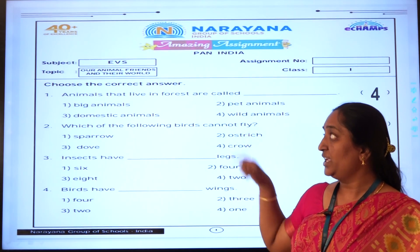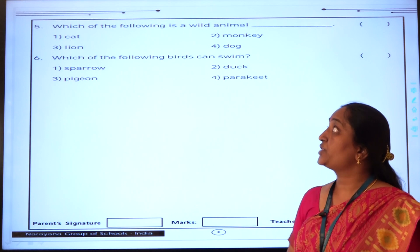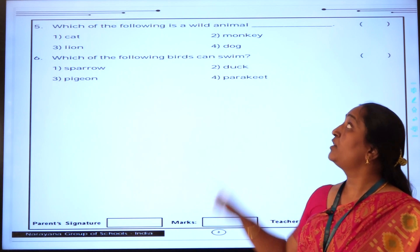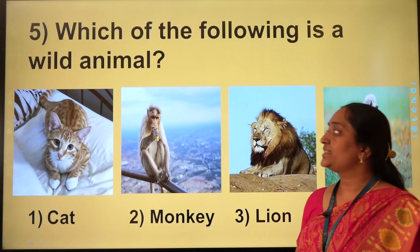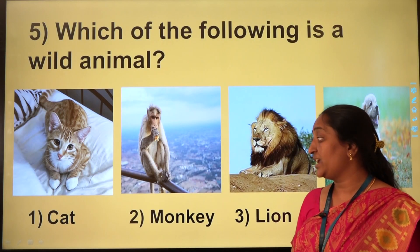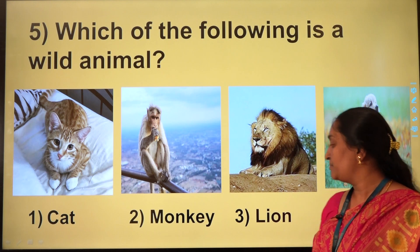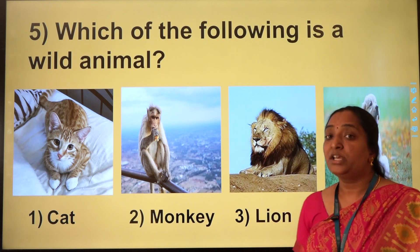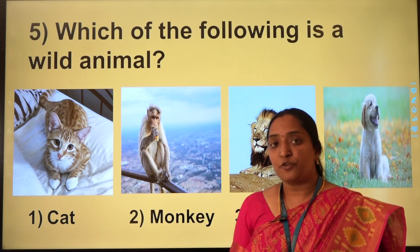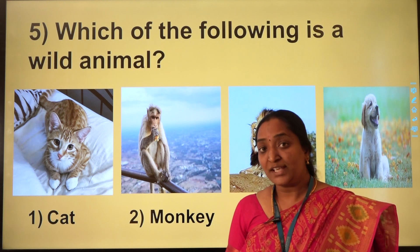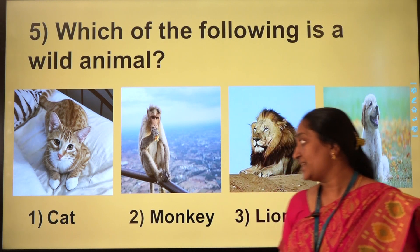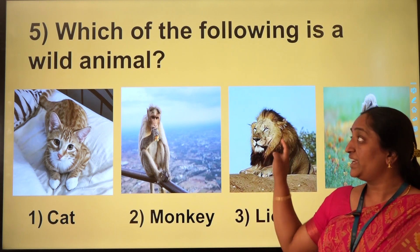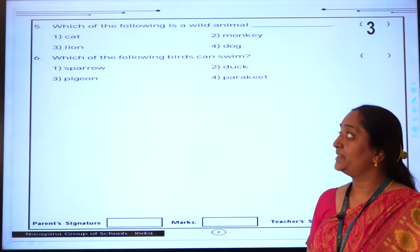Now let us go to the fifth question: which of the following is a wild animal? So here we have cat, monkey, lion, and dog. Animals that live in forests are called wild animals, and that is option number 3 — lion.